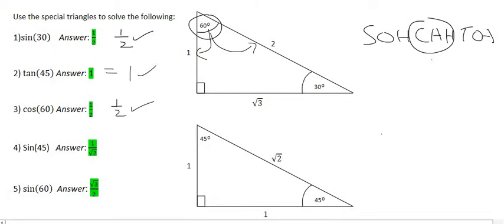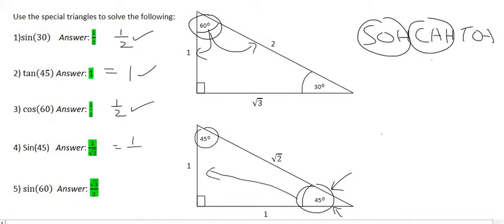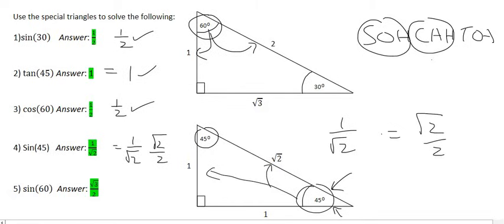Moving on to sin 45 — we go to the 45, and you can either choose this one or this one. This time I'm going to use this one. We're using special triangles, so sin 45 is the opposite over the hypotenuse: the opposite is one and the hypotenuse is the square root of two. If you type that into your calculator, it's going to give you an answer of square root two over two. Did you know that one over square root two is actually the same as square root of two over two?